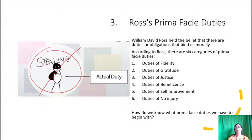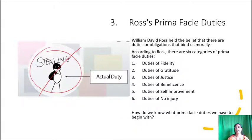Third is Ross's Prima Facie Duties. William David Ross held the belief that there are duties or obligations that bind us morally. Decision makers using this ethical philosophy must evaluate alternatives with respect to duties involved and determine the duty that is most obligatory. The term prima facie means 'on the surface' or 'at first sight.' For Ross, prima facie duties are those that ordinarily impose a moral obligation but under certain circumstances may not apply. We recognize a prima facie duty at first sight as being obligatory when all other things are equal and there are no conflicting duties.